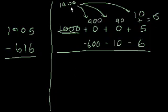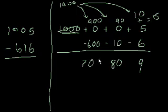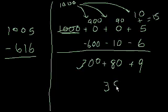Notice, we just said, so we had 1,000 and we just rewrote it as 900 plus 90 plus 10, and we added this 10 to this 5. And now we could do this subtraction just how we would do a normal problem. 15 minus 6 is 9, 90 minus 10 is 80, 900 minus 600 is 300. So 300 plus 80 plus 9 is 389.